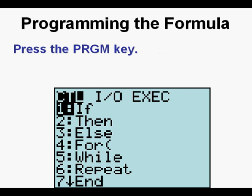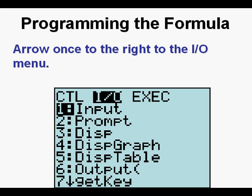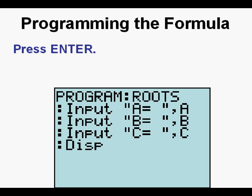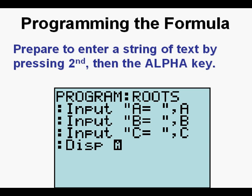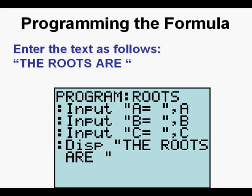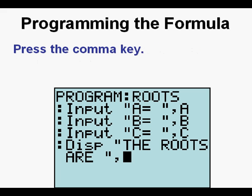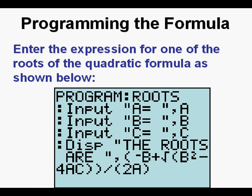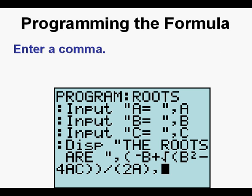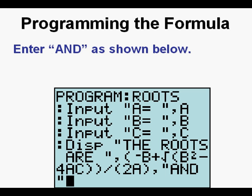Press the Program key, then arrow once to the right to the input/output menu. Arrow down to 3, Display. Press Enter. Prepare to enter a string of text by pressing Second, then the Alpha key. Enter the text: 'The Roots are...' Press the Alpha key to unlock Alpha mode, then press the Comma key. Enter the expression for one of the roots of the quadratic formula: open parentheses, negative B, plus square root of B squared, minus 4AC, close double parentheses, divide, open parentheses, 2A, close parentheses. Enter a comma, then enter the word 'and' in quotation marks.